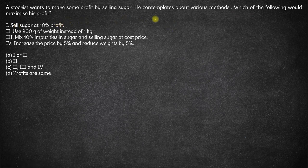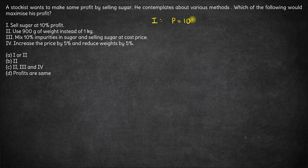The first option: sell sugar at 10% profit. This is pretty straightforward — the profit in the first part will be exactly 10%. No rocket science here, straightforward. Let's look at the second part.